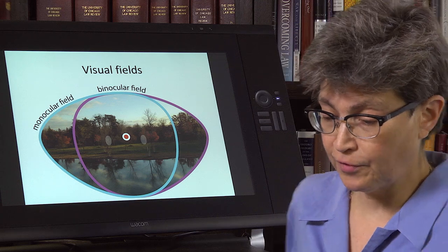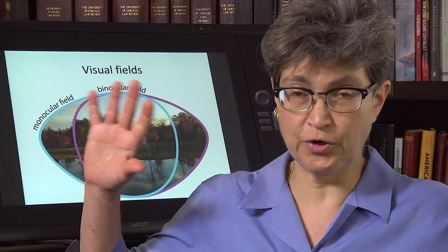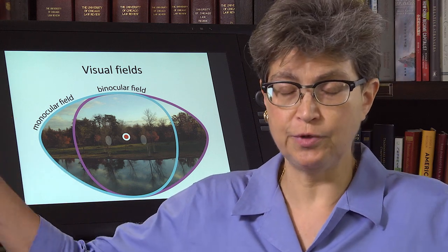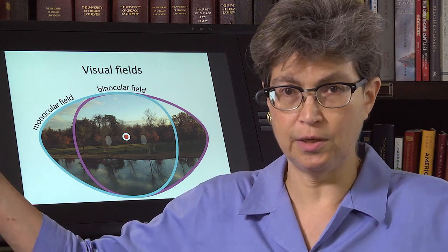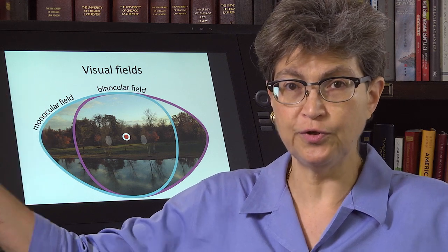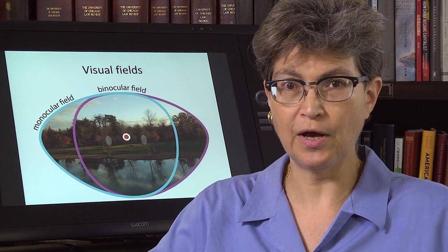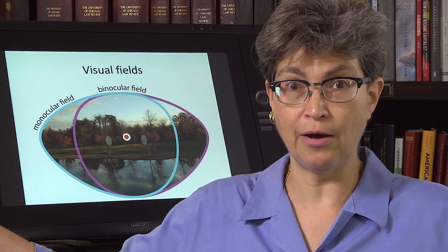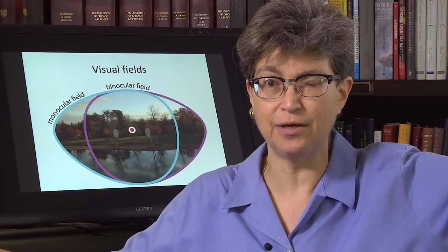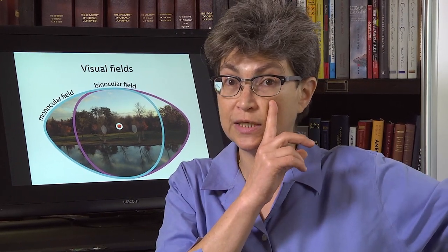So how do we see? Let's talk very broadly about the visual fields. Most of the visual field — and we see not 180, but darn close to 180 degrees — most of the visual field is seen by both eyes. But there's a little bit: if I'm looking out here and I close one of my eyes, I see that a little bit out here is now not visible to me. It's only visible to this eye.